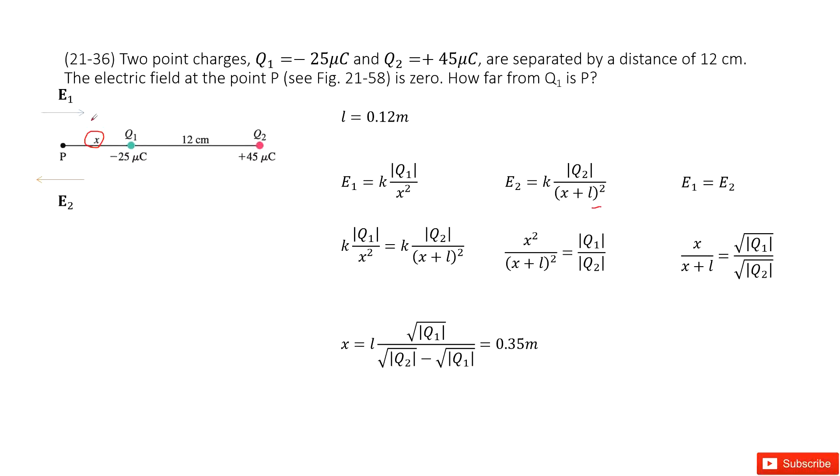Now it tells us the electric field at this position P is 0. So that means the vector E1 plus vector E2 equals 0. And we can see these two vectors are in the opposite direction. So this vector can be 0.